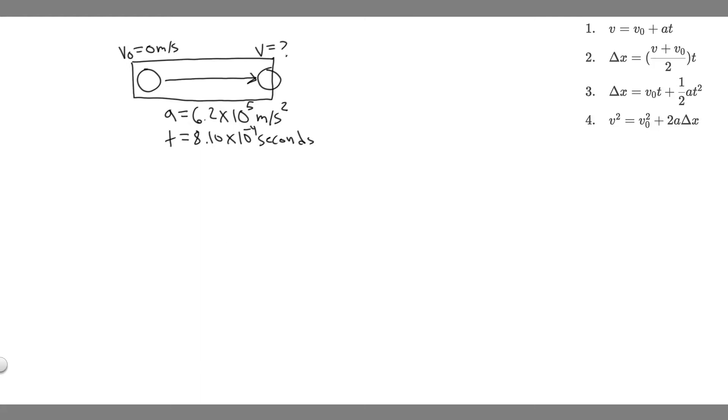In this problem, we're told the bullet in a gun is accelerated from the firing chamber to the end of a barrel at an average rate of 6.2 times 10 to the 5 meters per second squared for 8.1 times 10 to the minus 4 seconds. What is the muzzle velocity? That is its final velocity.